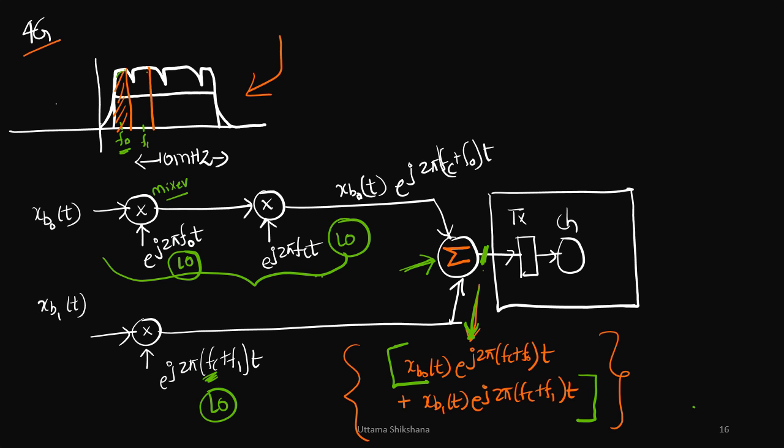It is equivalent to shifting the baseband signal to the corresponding subband frequency. So that operation is given by this local oscillator and mixer. Then finally that will be upconverted using the center frequency and the signal generated is shown over here.